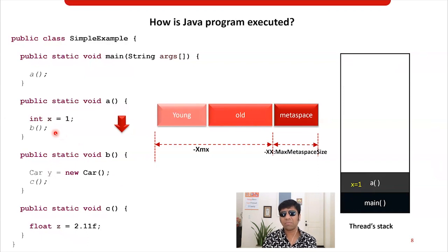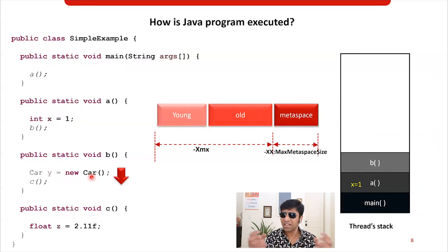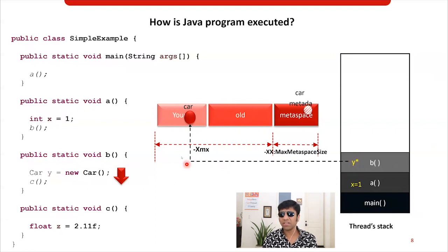After doing this, the thread goes on to invoke method B. Method B is added to the thread stack frame. Where is variable Y going to be stored, and where is the complex car object going to be stored? The car has a class file — car.class — with class definitions. These class definitions are stored in metaspace as metadata. But the actual car object is stored in the young generation because it was just newly created. Since Y is a local variable, it is stored in the thread stack frame itself, and it is pointing to the car object in the young generation.